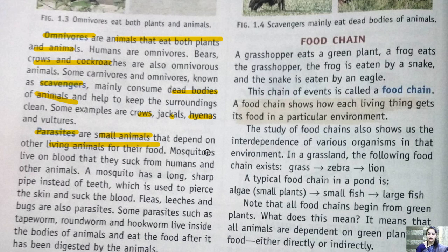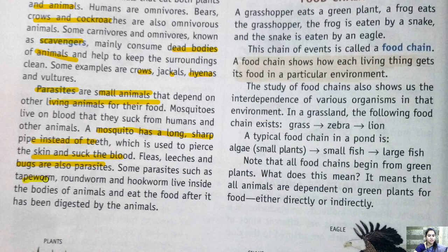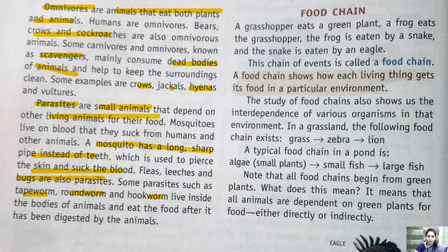Parasites are small animals that depend on other living animals for their food. For example, a mosquito sits on us and sucks blood — it depends on a living organism for food. Mosquitoes have a long sharp pipe-like structure instead of teeth, which is used to pierce the skin and suck blood. Fleas, leeches, and bugs are also parasites. Some parasites like tapeworms, roundworms, and hookworms live inside the bodies of animals and eat digested food.